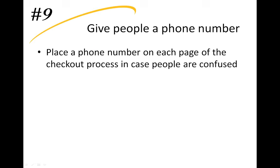Number nine: if people get to a point in your checkout process where they're confused or can't get past an invalid entry error, and they just want to call someone — if you have the staffing to support it, put a phone number on every page of your checkout process. Give people that out. Sites like Amazon don't do that because they don't want to bear the cost of manning phones, but that's a business decision. If I'm selling a $3,000 certificate program and people are getting confused, I want them to call me. Let's talk about it rather than having them go away frustrated and maybe go to a competitor program.